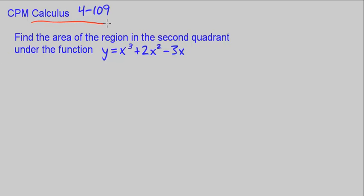This is CPM Calculus Chapter 4, number 109. Find the area of the region in the second quadrant under the function y equals x cubed plus 2x squared minus 3x.